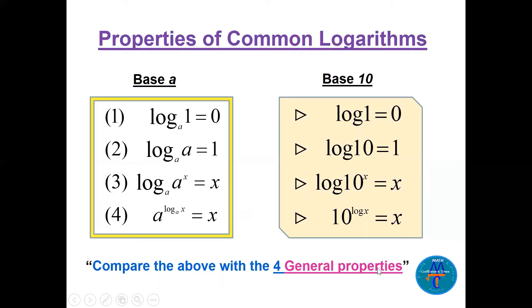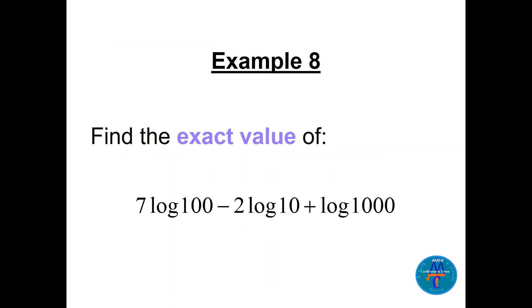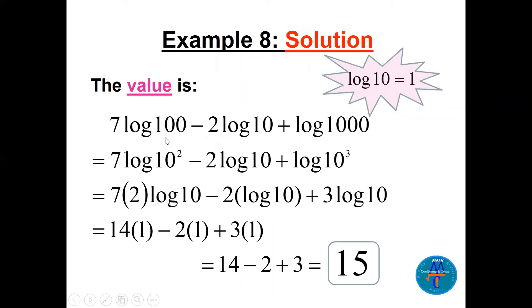The same four properties apply when using base 10, which we call common logarithm — we don't write the base when it's 10. So: log of 1 equals 0, log of 10 equals 1, log of 10 to the power x equals x, and 10 to the power log of x equals x. For example, evaluating an expression: log of 100 is 2 (since 100 equals 10 squared), log of 10 equals 1, and bringing powers down, the final answer is 15.